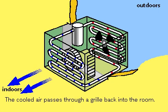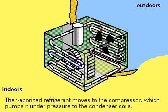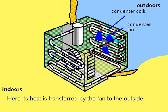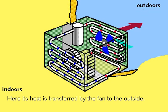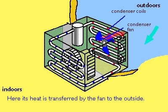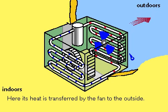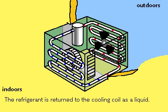The refrigerant gas is then compressed, increasing its temperature. To return to a liquid state, the refrigerant must give up its heat. The heat transfer is accomplished by having outdoor air blown through the condenser coils containing the compressed gas, thus cooling the gas and transforming it back to a liquid, which is then returned to the cooling coils.